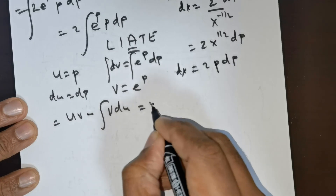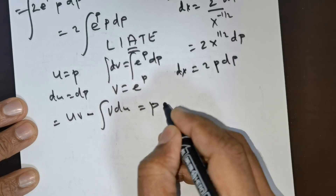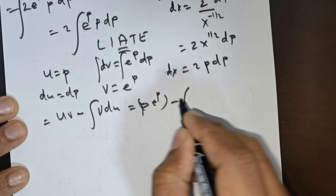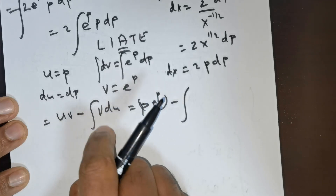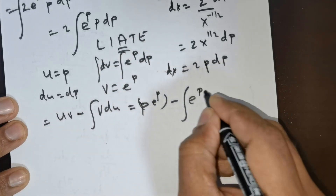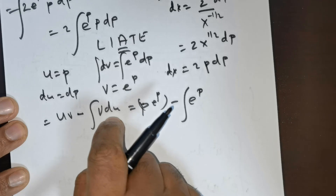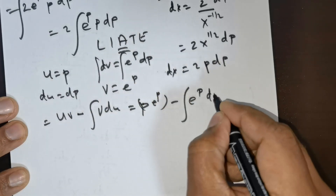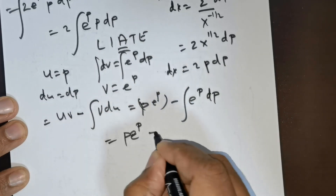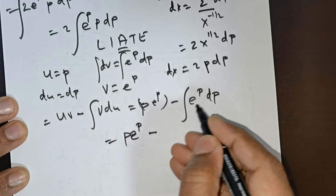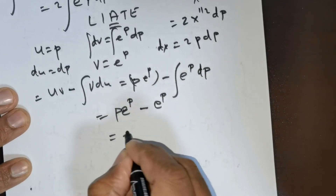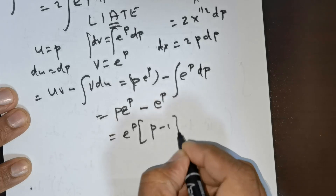This gives p times v, which is e raised to the power of p, minus the integral of v du — so e raised to the power of p times dp. This is going to be p times e raised to the power of p minus, integrating, e raised to the power of p. Factor out e raised to the power of p, and you get p minus 1.